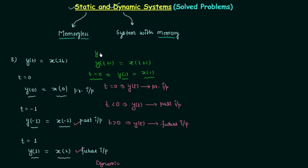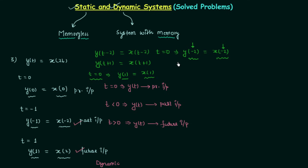Another example: y(t−2) = x(t−2). When t equals 0 you have y(−2) = x(−2). We have the past output dependent on the past input at the same time instant. So the system is again static in nature. In both these cases the relationship is not given in terms of the present output — one is past output and one is future output. Now we will discuss the fourth problem.